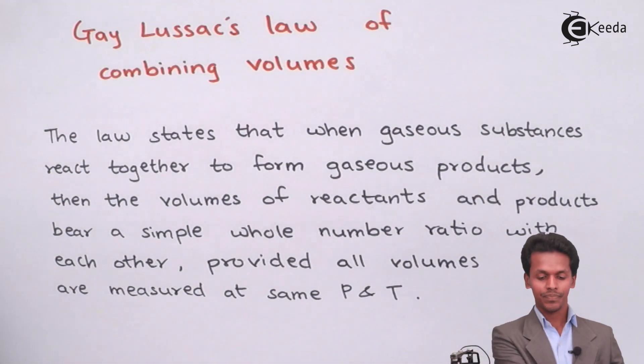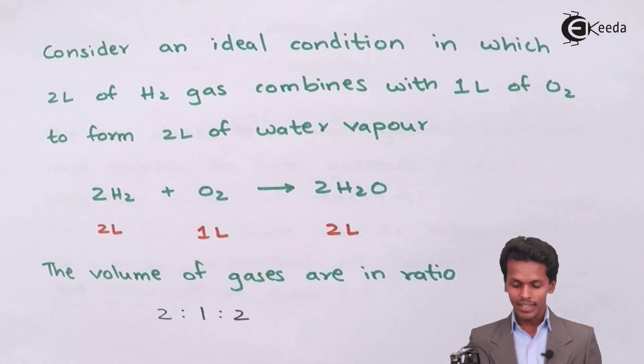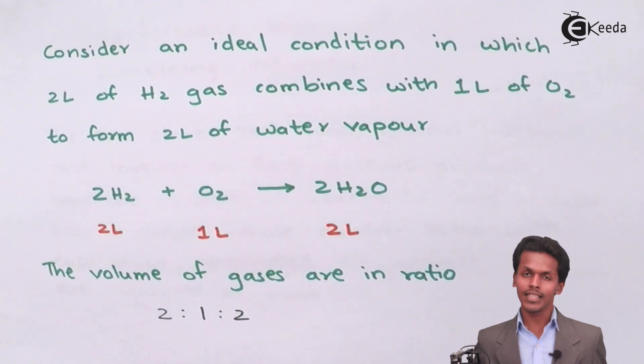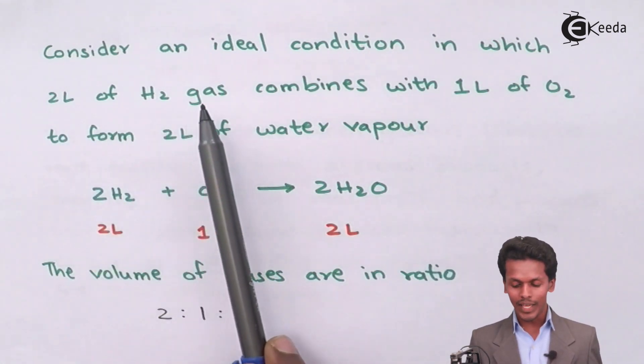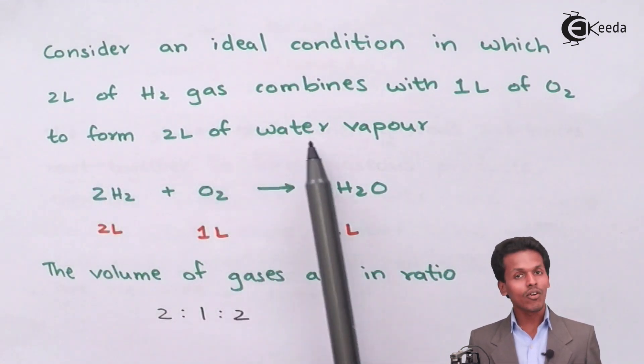Consider an ideal condition in which the pressure and temperature are kept constant throughout the whole reaction, in which 2 liters of H2 gas combines with 1 liter of oxygen to form 2 liters of water vapor.